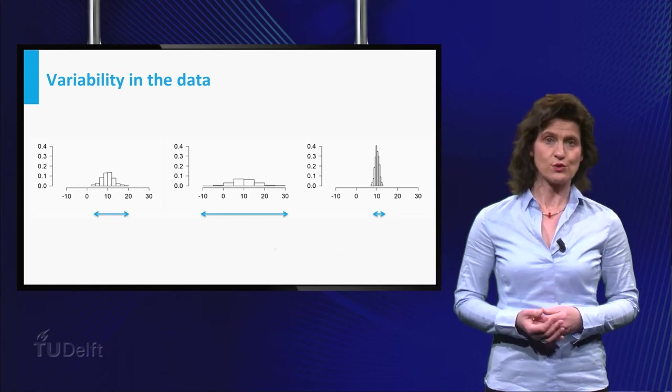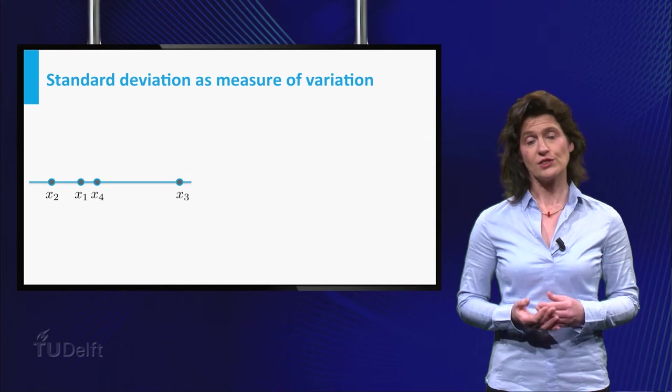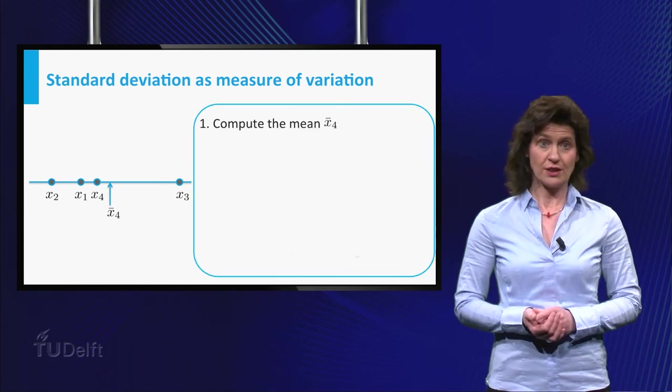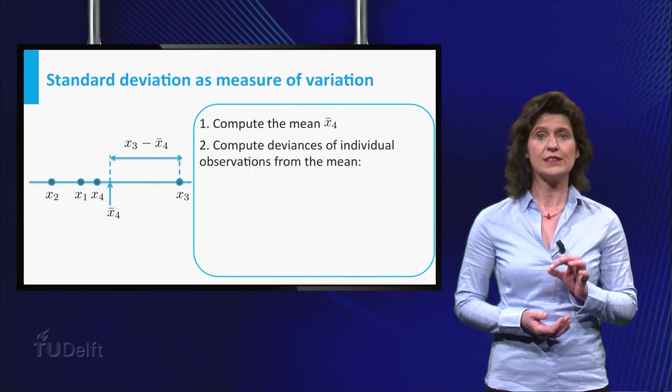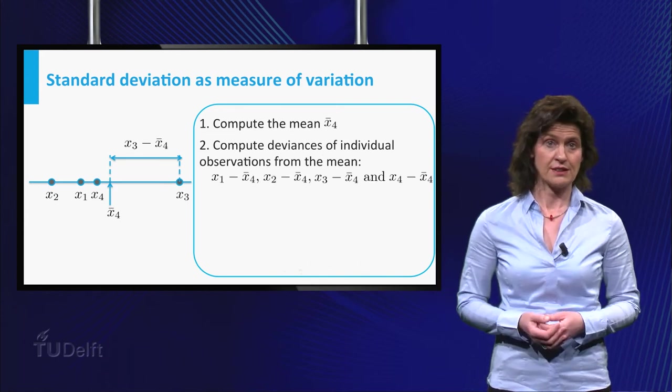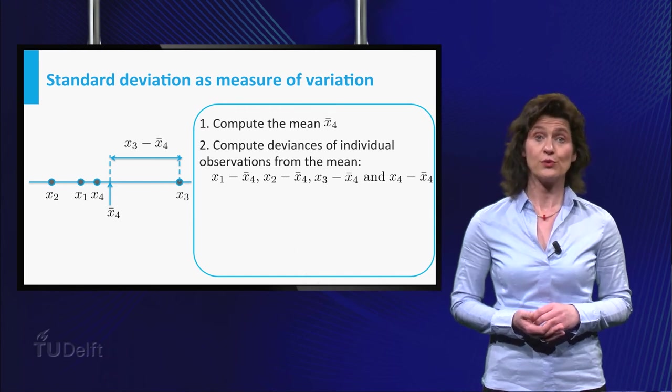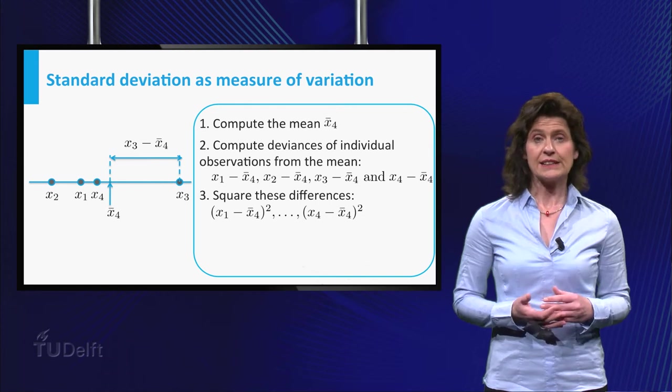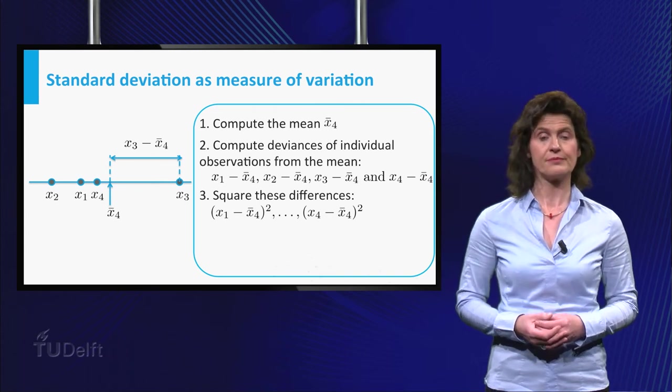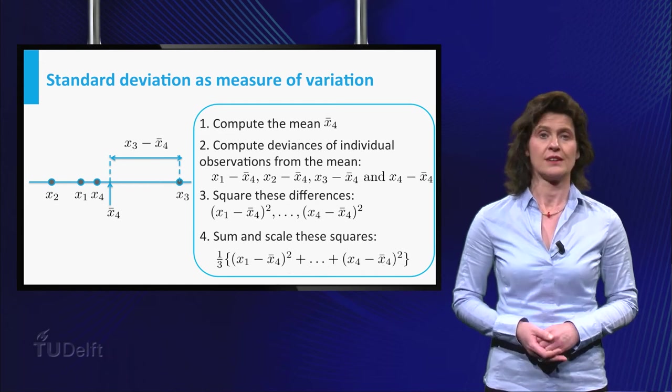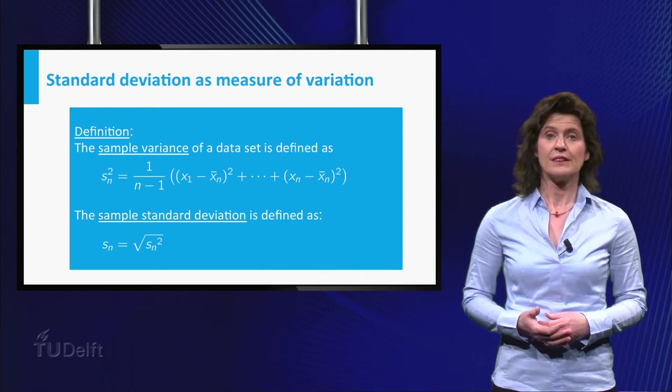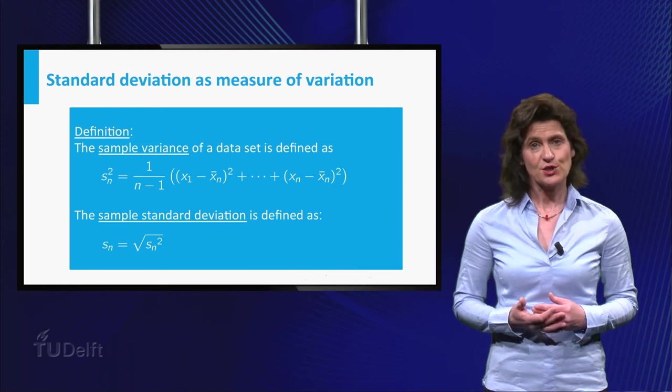The most commonly used measure of spread is the standard deviation. It is constructed in a couple of steps. Consider an example with four data points visualized here. First, compute the mean of the data. Then for each individual data point, compute the difference with the mean, yielding in our example four differences. Then square these differences. This way you obtain four non-negative numbers. It is intuitively clear that high variation in the data will yield on average high value of these square differences. Then sum and scale these squares. The so-called sample variance is defined by this formula and computed by this procedure. Finally, the standard deviation is the square root of the sample variance.